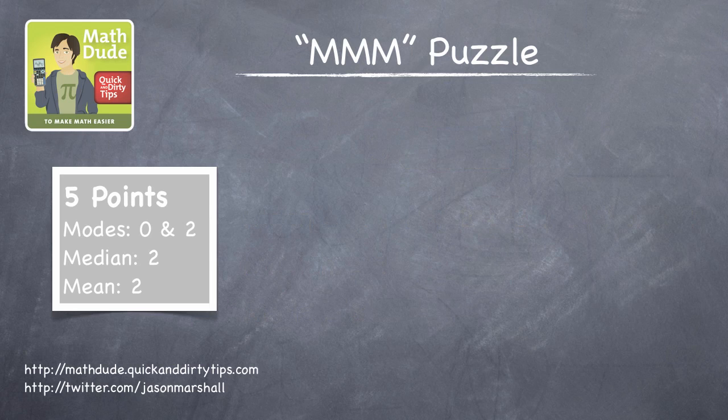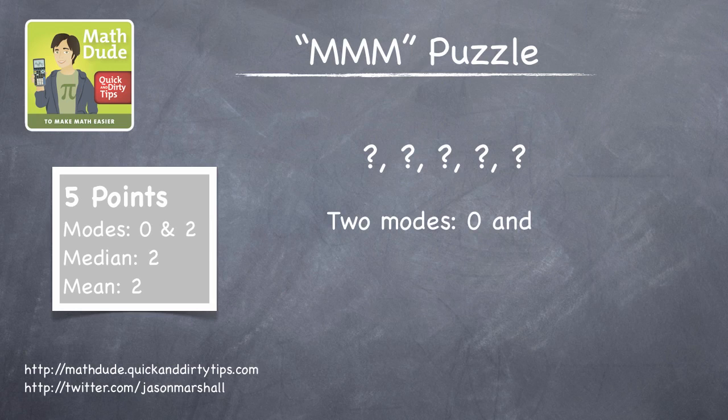Okay, we're now ready to solve the puzzle. We need five numbers, and this group of numbers has to have certain properties. Namely, there must be two modes, 0 and 2. Let's start there.